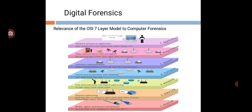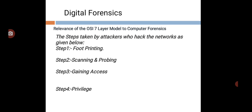The application layer handles network processes to applications — it is the final layer visible to the user. Now there are seven steps taken by an attacker who has hacked the network. The first step is foot printing, which includes a combination of tools and techniques.